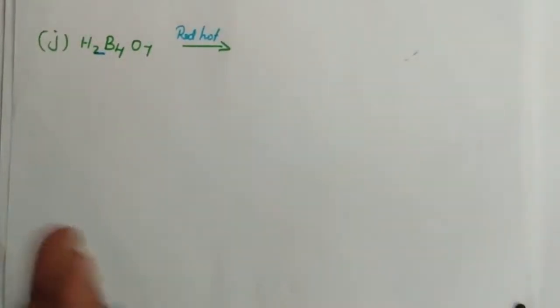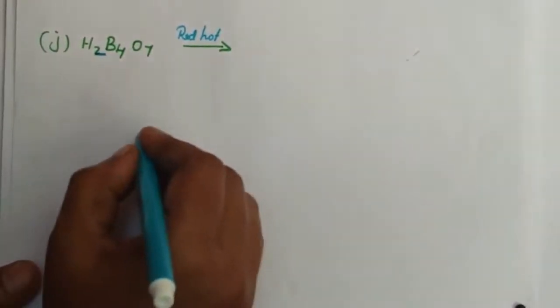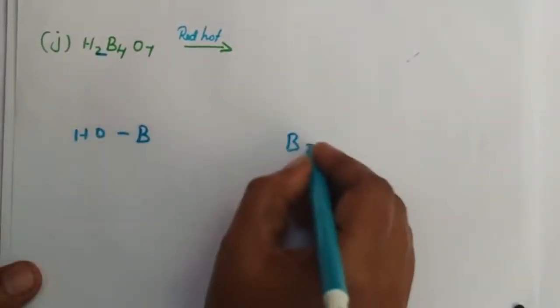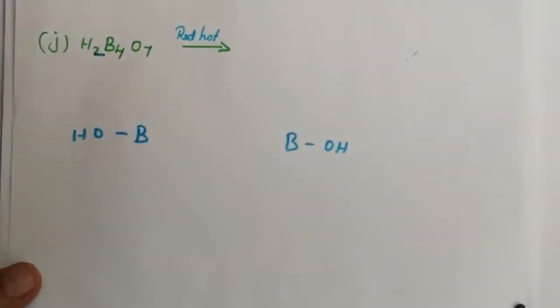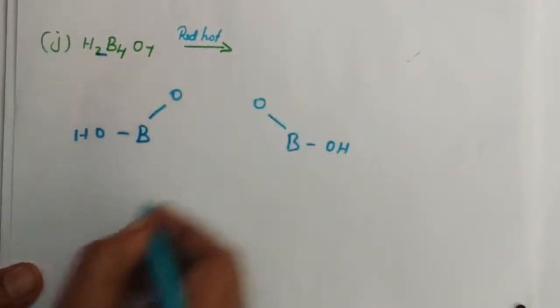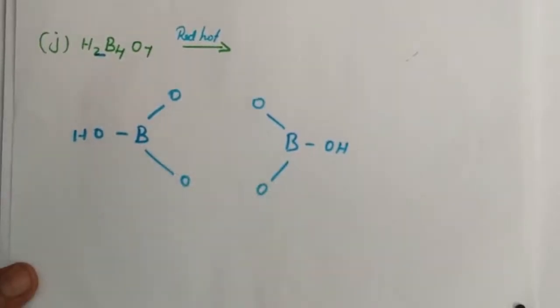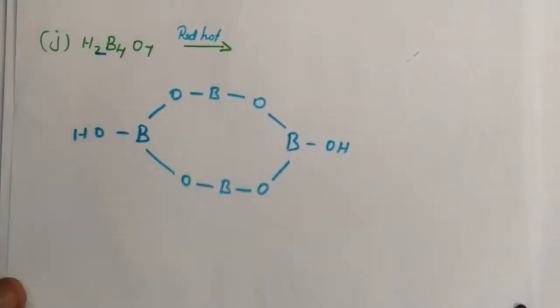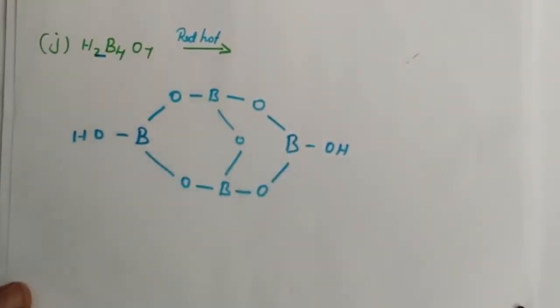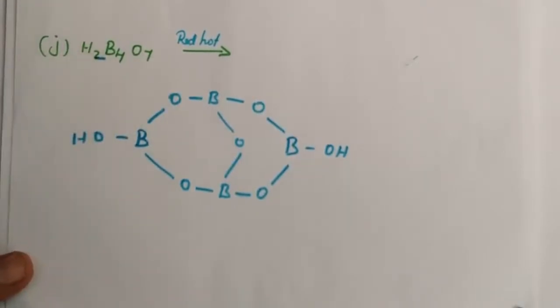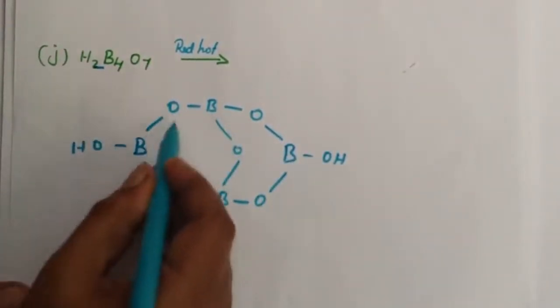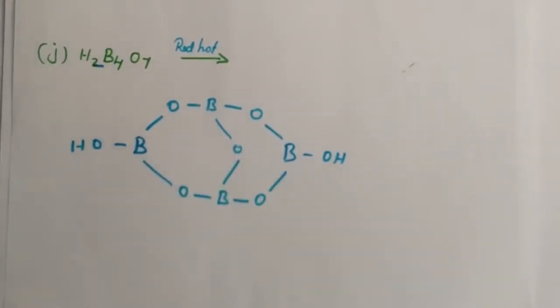Next, H2B4O7. We need to heat in a red hot tube. How do we understand the structure? We draw the structural formula with four boron atoms. Two borons on top and two on bottom. H2 is placed here. This boron connects with oxygen, and this boron connects with oxygen. The two borons are connected through oxygen atoms. Counting: H2, B4 for four borons, and seven oxygens - one, two, three, four, five, six, seven.